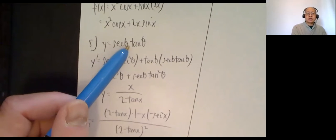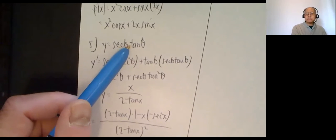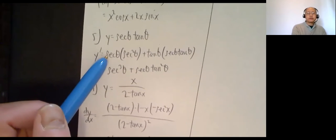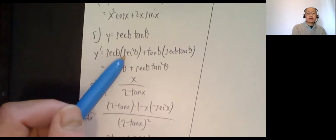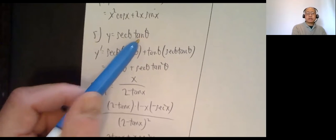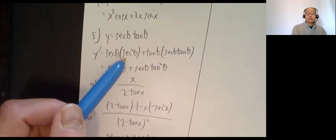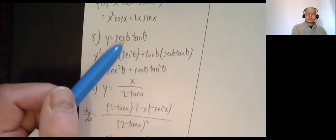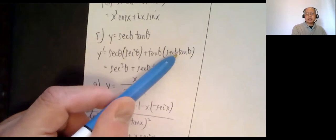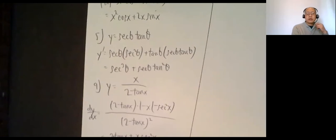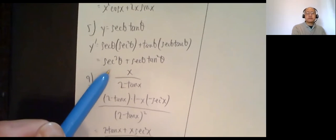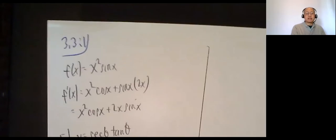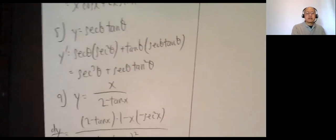Number five: y equals secant theta times tangent theta. Product rule. Y prime is first times derivative of the second: secant theta times the derivative of tangent theta, which is secant squared theta. Plus the second function tangent theta times the derivative of the first — derivative of secant theta is secant theta tangent theta. After cleanup: secant cubed theta plus secant theta tangent squared theta.